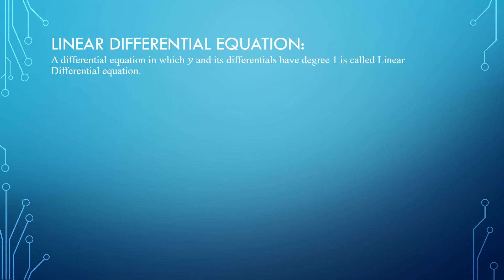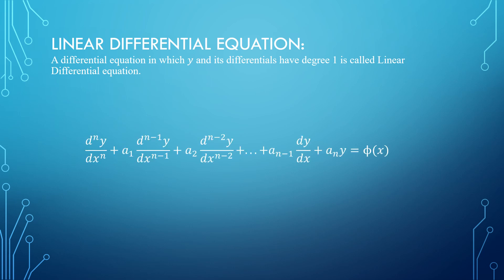A linear differential equation is an equation where y and all its derivatives have degree one. The general form is d^n·y/dx^n plus a₁·(d^(n−1)y/dx^(n−1)) plus a₂·(d^(n−2)y/dx^(n−2)) and so on, up to dy/dx and y, equal to some function of x. Apart from functions of x, every expression here will have degree one. Y will not be multiplied to any of its derivatives. Then the equation is called a linear differential equation.